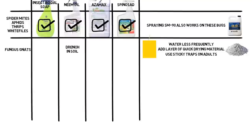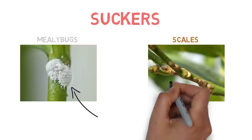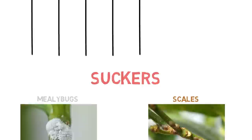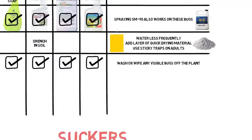Moving on to slightly larger insects — mealybugs and scales. Both suck the sap out of plants and can be found feeding on leaves and stems. Since both are visible to the eye without magnification, you can first try to pick, wipe, or spray off any you see with water, then use neem oil, Azamax, insecticidal soaps, spinosad, or a combination of these to get rid of the rest.